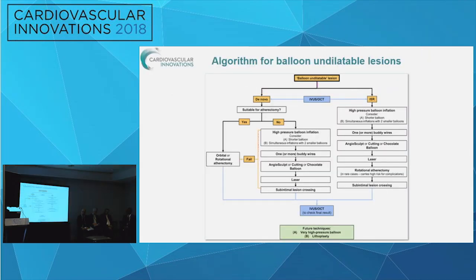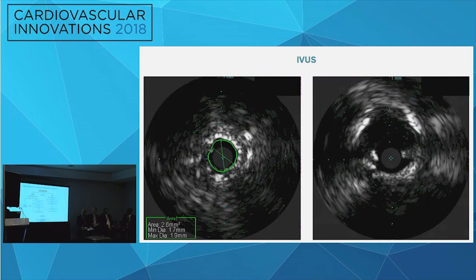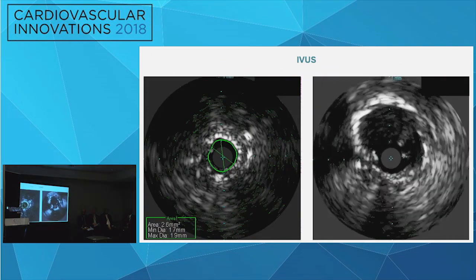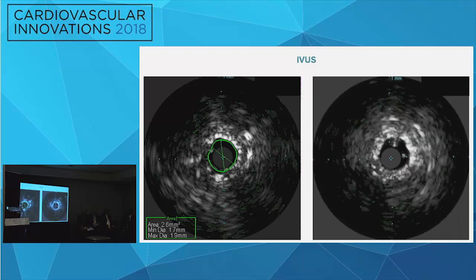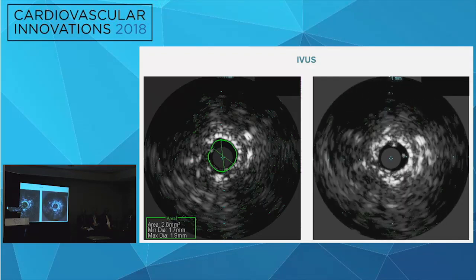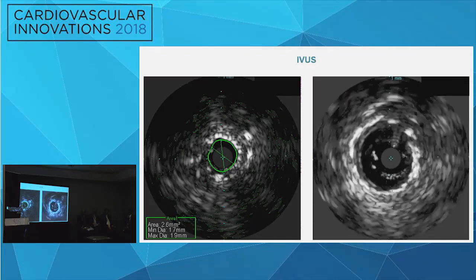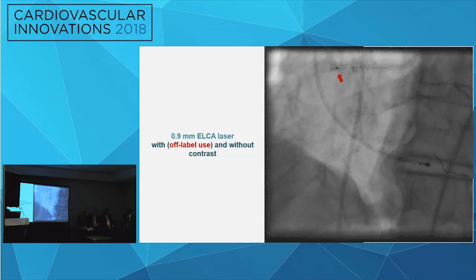We recognized that we faced a balloon undilatable lesion, and this is the current algorithm we are using for treating such a phenomenon. Initially, we performed intravascular ultrasound, showing an MLA of 2.6 square millimeters.